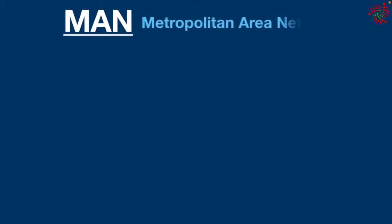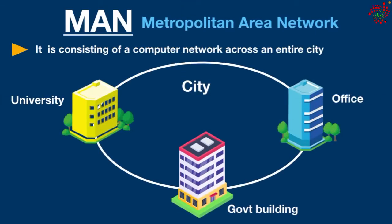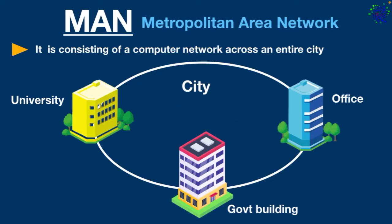The next type is MAN — Metropolitan Area Network. It consists of a computer network across an entire city or small town. This type of network is larger than a LAN, which is mostly limited to a single building. Depending on the configuration, MAN can cover an area from 5 to 50 kilometers. MANs are usually connected using high-speed carriers such as optical fiber cables. Most commonly used protocols in MAN are Frame Relay, ATM, and ADSL. MAN is used in banks, airlines, and the military.